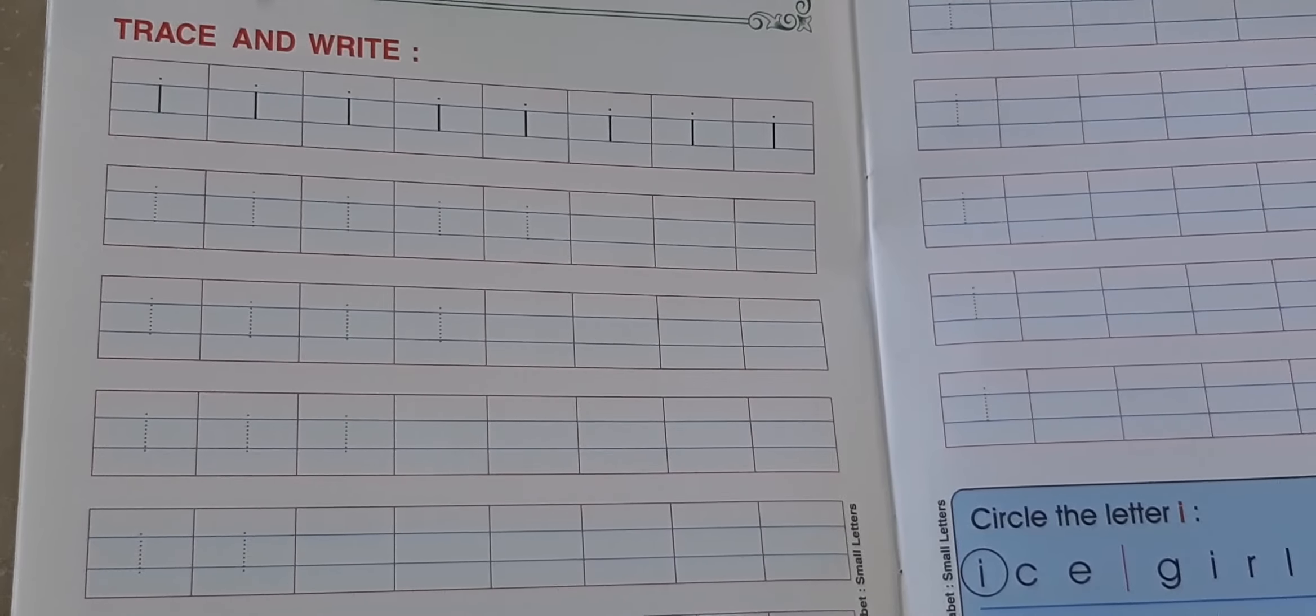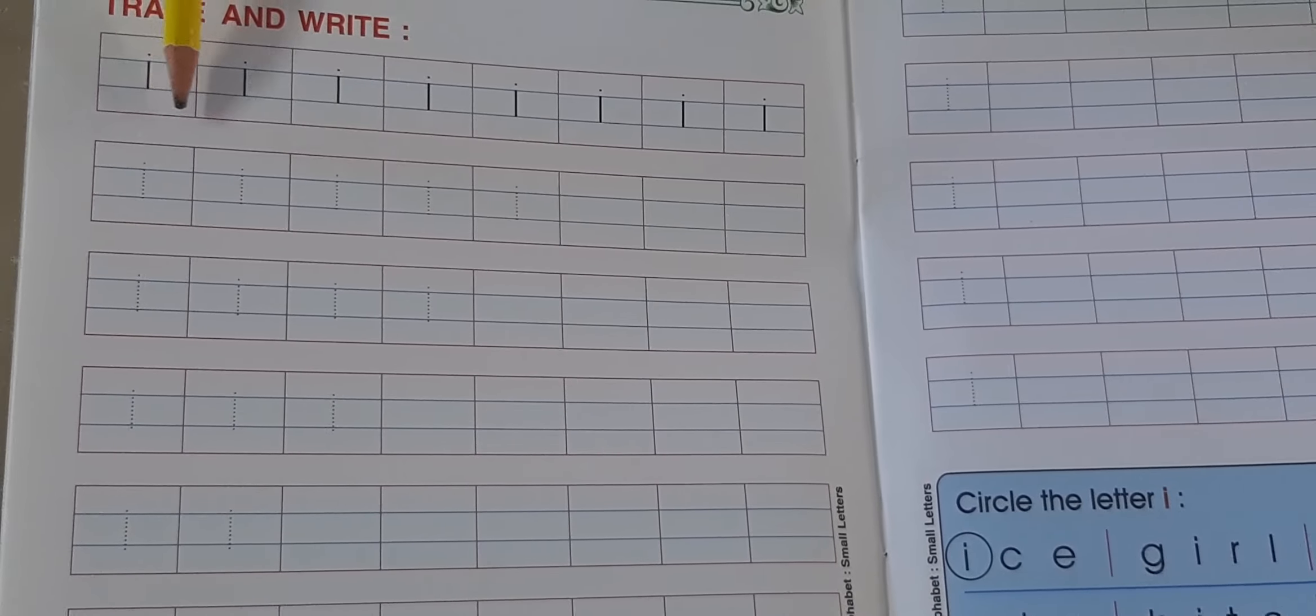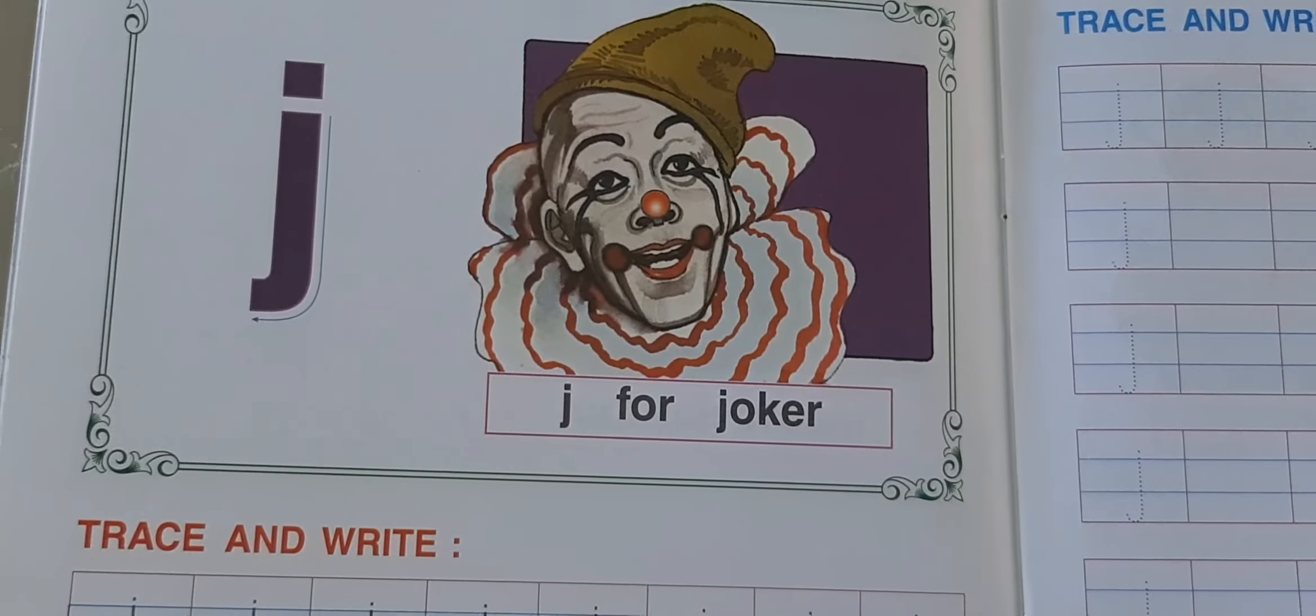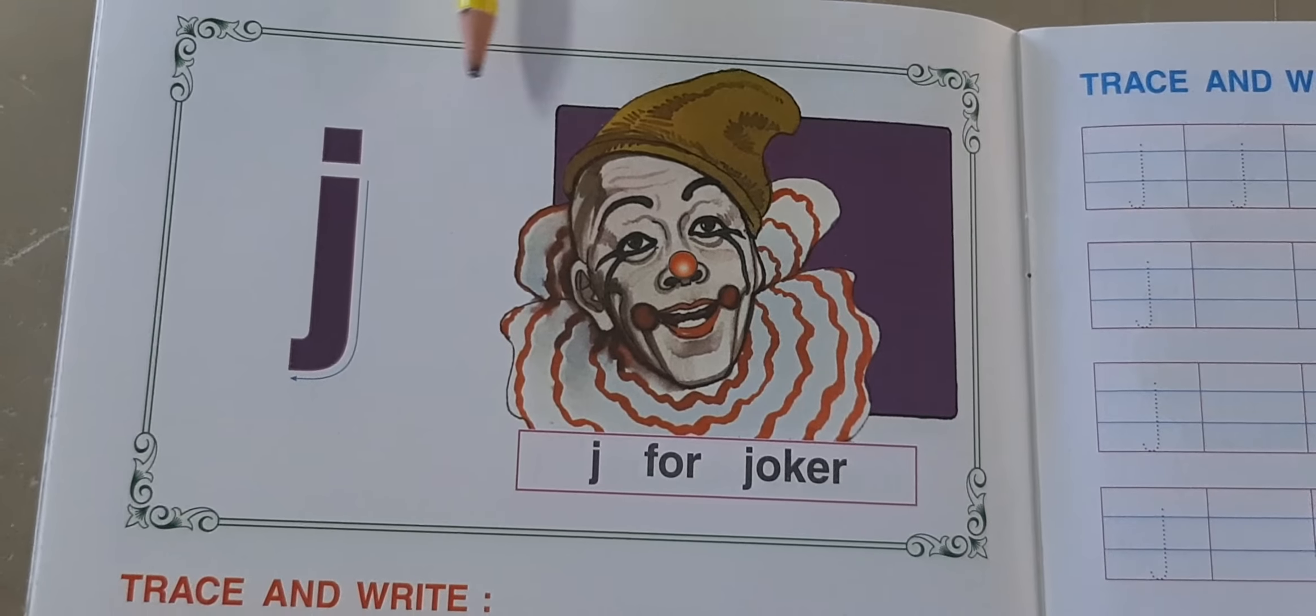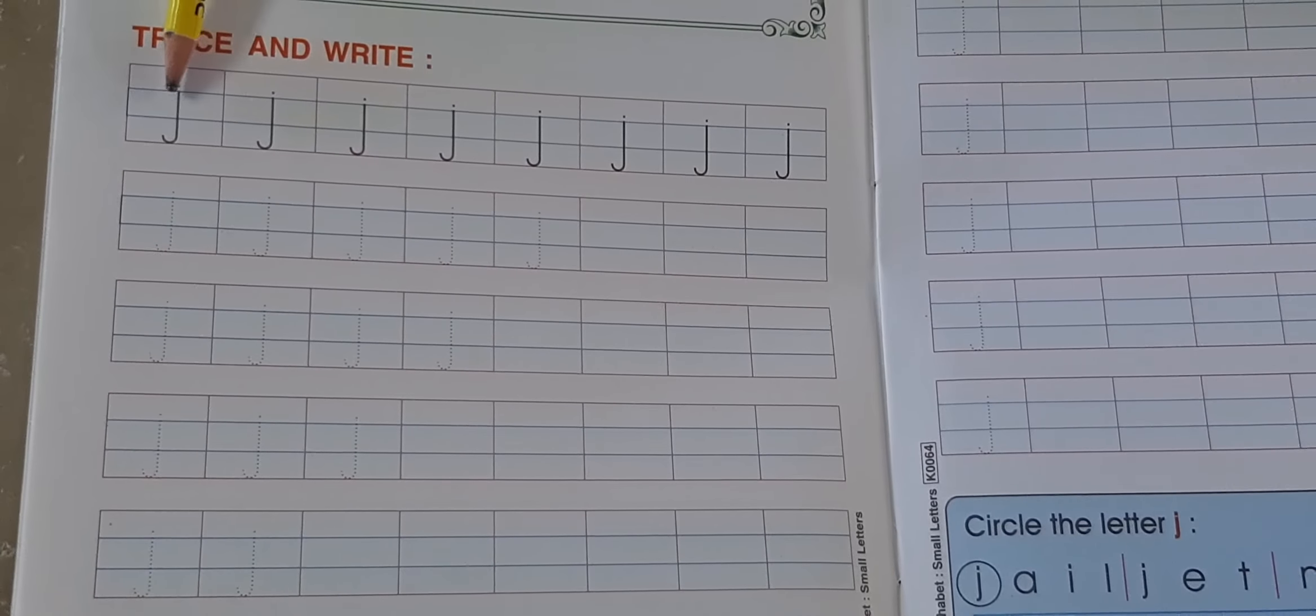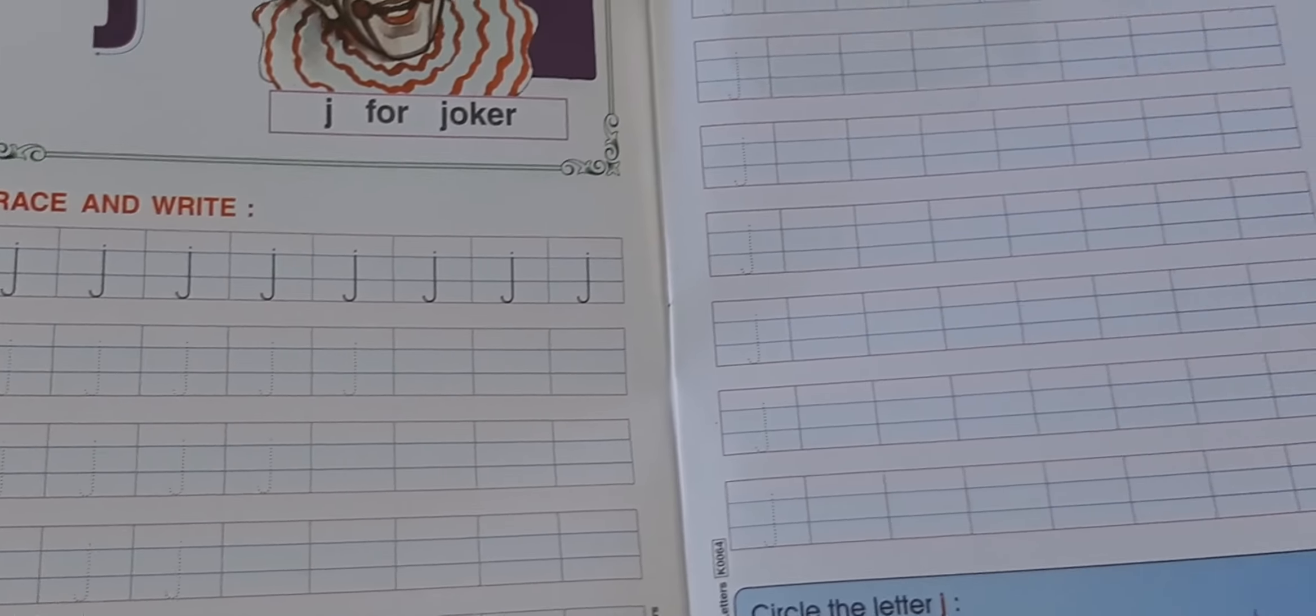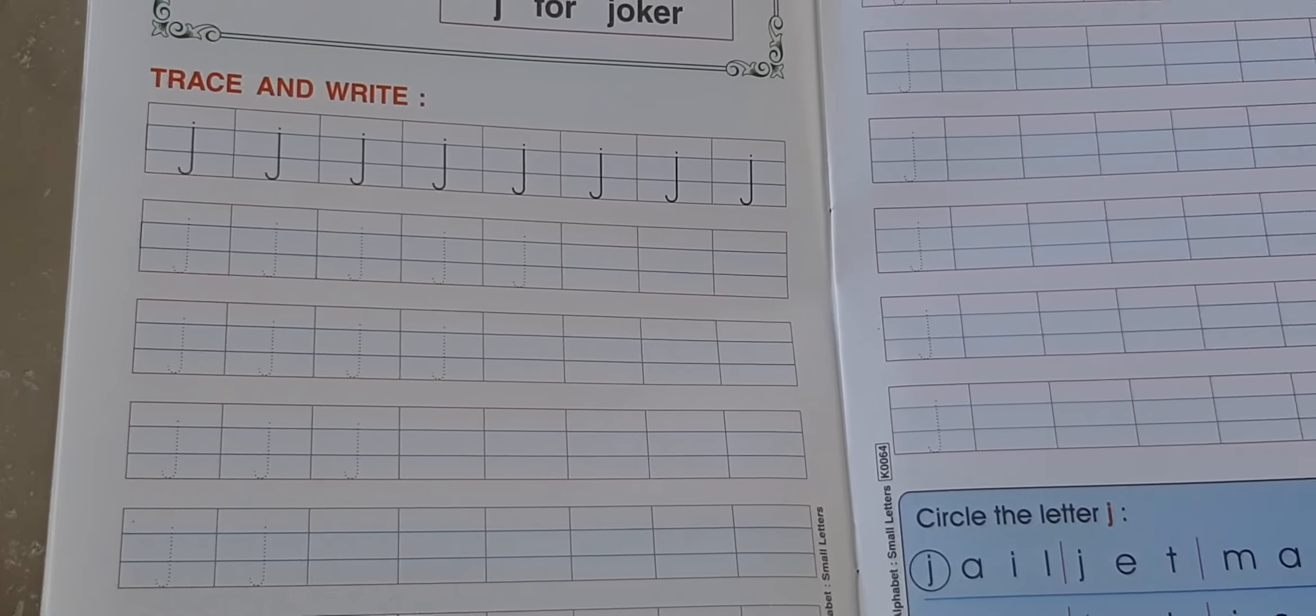તો આ છે તમારુ આજનો ઘર કામ જો એં દેખાય છે ને બદ્ધા લીટા માં તમારે આઈ લખવાનું છે ડોટસ કરેલ બરબર અને નીચે તમારે લખવાનું છે જે ફોર જોકર બોલી બોલી ને લખજો જે ફોર જોકર જોકર જે ફોર જોકર.